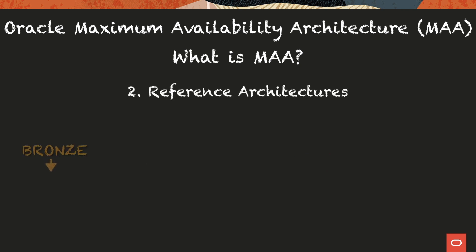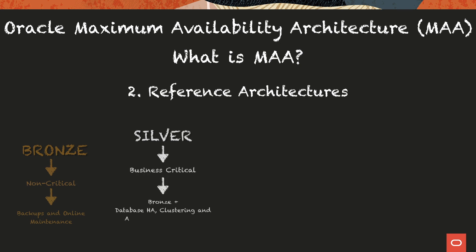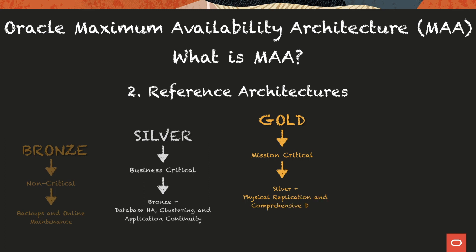The first is Bronze, which is for non-critical environments and provides backups and online maintenance. The second is Silver, which is for business-critical environments and provides HA, clustering, and application continuity for databases. The third is Gold, which is for mission-critical environments and provides physical replication and comprehensive data protection.